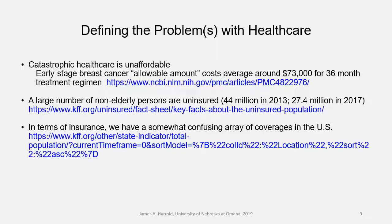A second problem: a large number of non-elderly persons are uninsured. In 2013, prior to the Affordable Care Act, about 44 million non-elderly persons in the United States were without insurance. That number has gone down to about 27.4 million, but it's still a fairly high number. A third problem: in terms of insurance, we have a somewhat confusing array of coverages in the U.S. The Kaiser Family Foundation data shows the percentage of persons insured in each state through private insurance, Medicare, Medicaid, or other kinds of insurance, plus the number uninsured — reflecting a lot of different kinds of coverages, not even counting variation within each type.